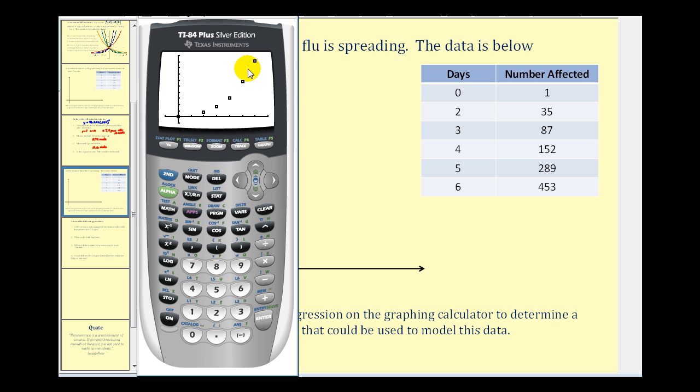Let's go ahead and press graph. Here's the data. It does look like it's exponential growth. Of course, we could also try quadratic regression to see if that's a better fit, but for this video, we're looking at the exponential function. If we press the trace key, it'll show the coordinates of each point, so we can make sure that we enter the data in correctly. And everything looks good.